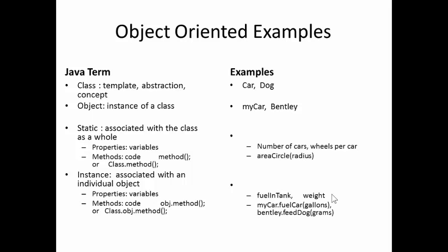We can also talk about things that are static, that is, associated with the class as a whole, and instance, which are associated with an individual object. So for example, a property of the car class is the number of cars. The number of cars is not a property of any individual car. It's a property of the class as a whole.